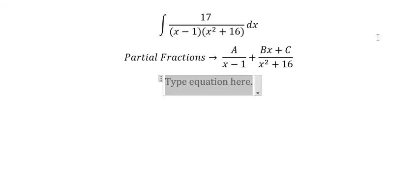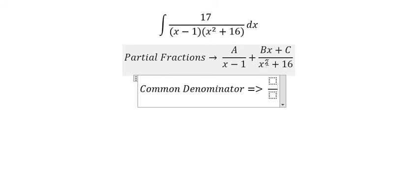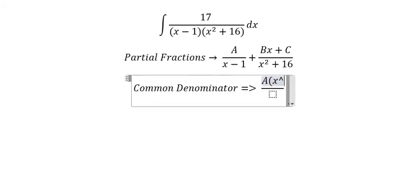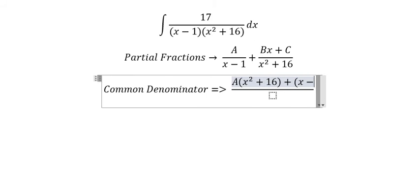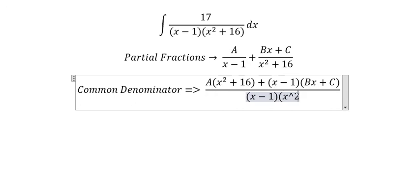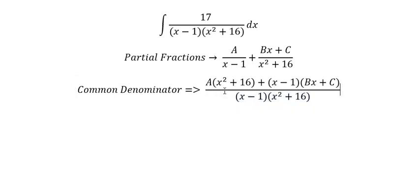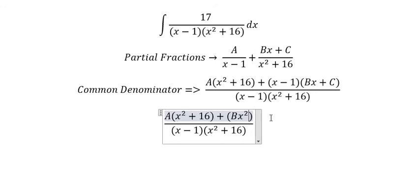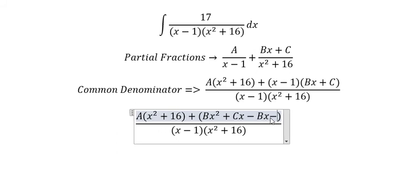Next we need to do common denominator. So we put capital A multiplied with this one and Bx plus C multiplied with x minus 1. Next we need to multiply with this one. So you got Bx square plus Cx minus Bx minus C.